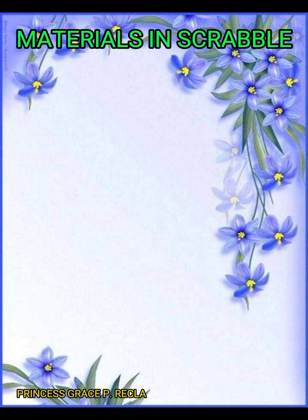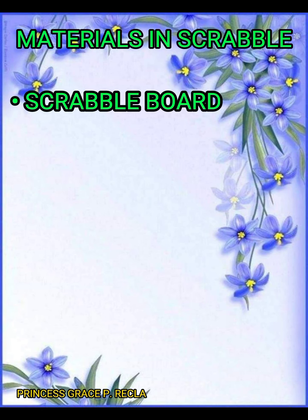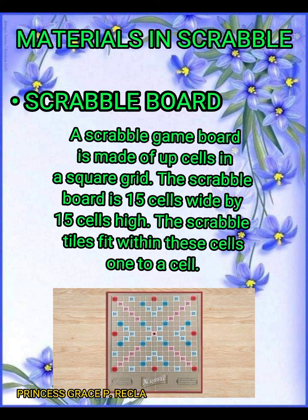Materials in Scrabble. First, the Scrabble board. A Scrabble game board is made of squares arranged in a square grid. The Scrabble board is 15 cells wide by 15 cells high. The Scrabble tiles fit within these cells, one tile to a cell.